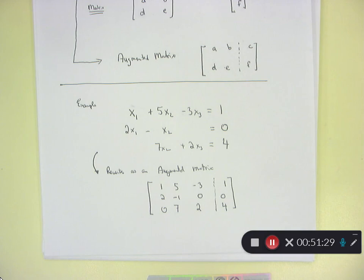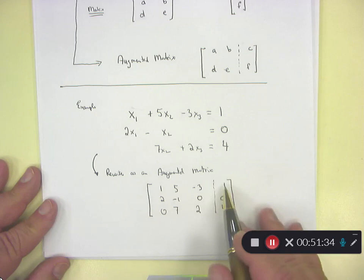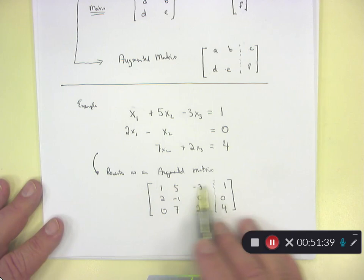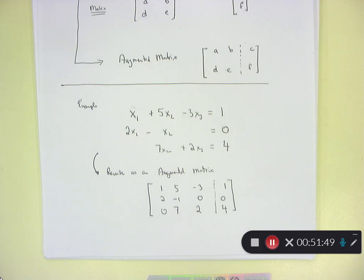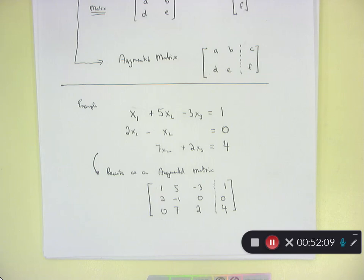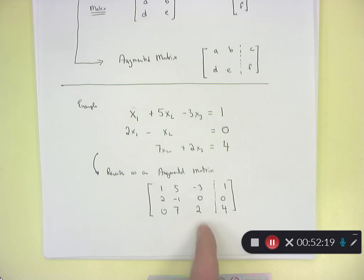The point of the augmented matrix is that it saves time. In the substitution method, I kept carrying over X and Y variables. But with elimination, I was only focusing on coefficients. Since positioning is everything, the first column is the X1 column, the second is X2, the third is X3, the dotted line is the equals sign, and the fourth column is the constant. So you don't have to keep writing X1, X2, X3 all over the place.